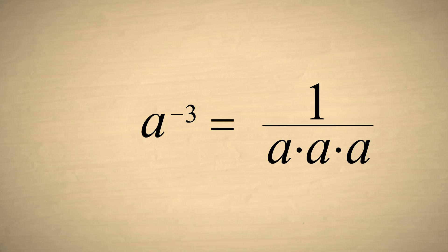The only number that cannot have a negative exponent is zero, since this would be the same as one over zero.